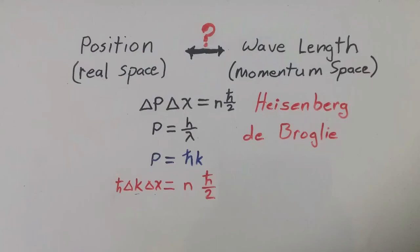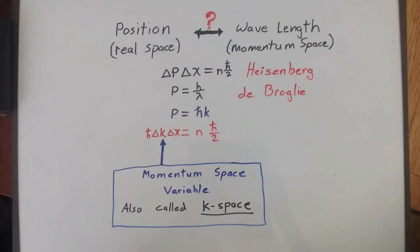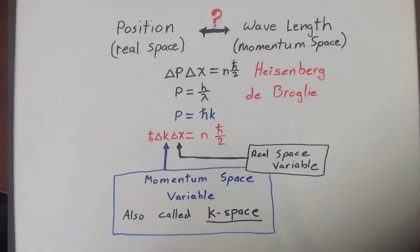k is just the inverse of the wavelength, so as the momentum gets larger, so does k. k is then the variable used to describe momentum space wave functions, and of course x is the common spatial or real space variable. Let's start with a common well-known example, the hydrogen atom.